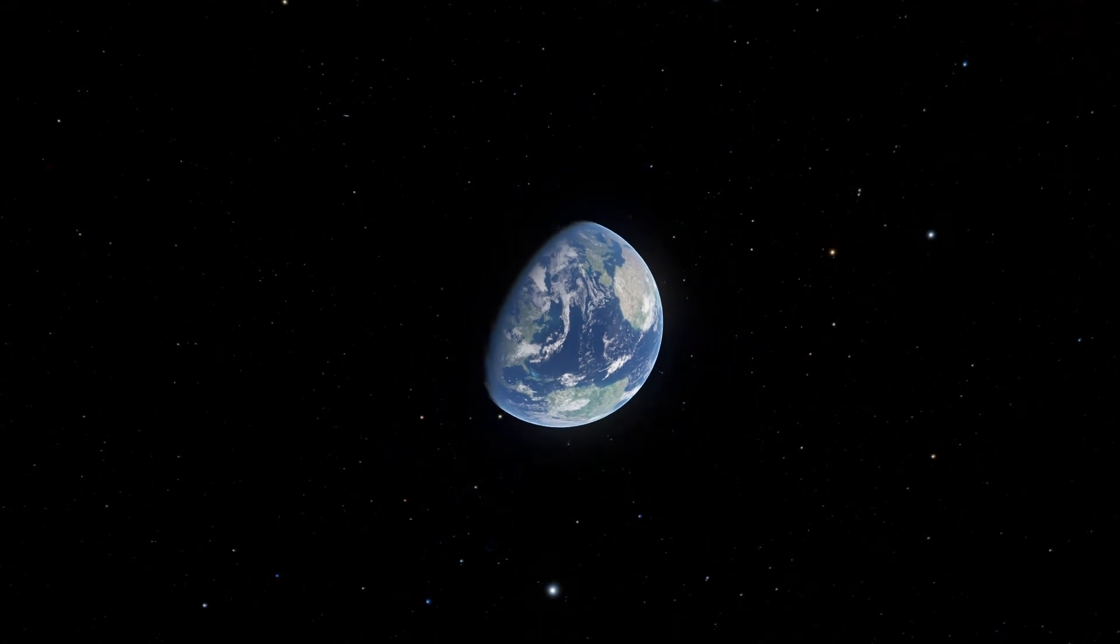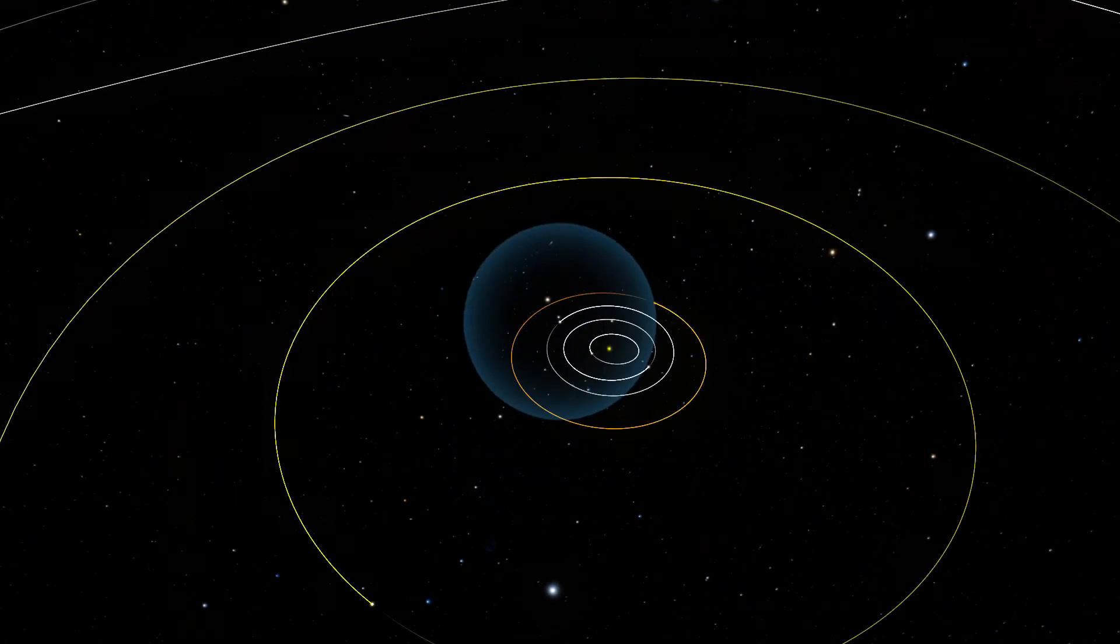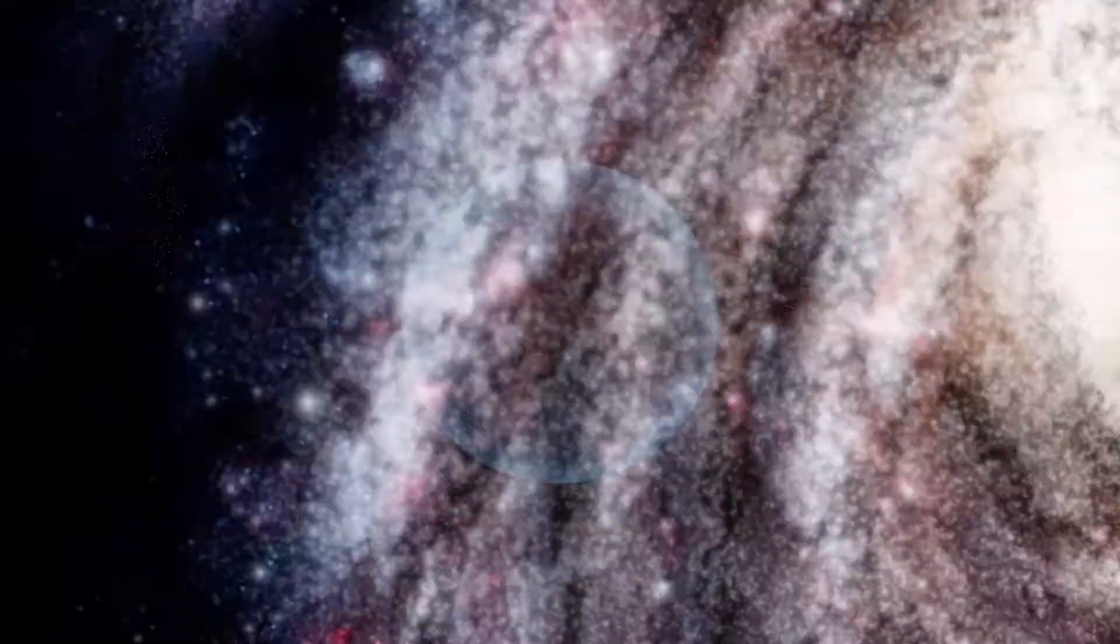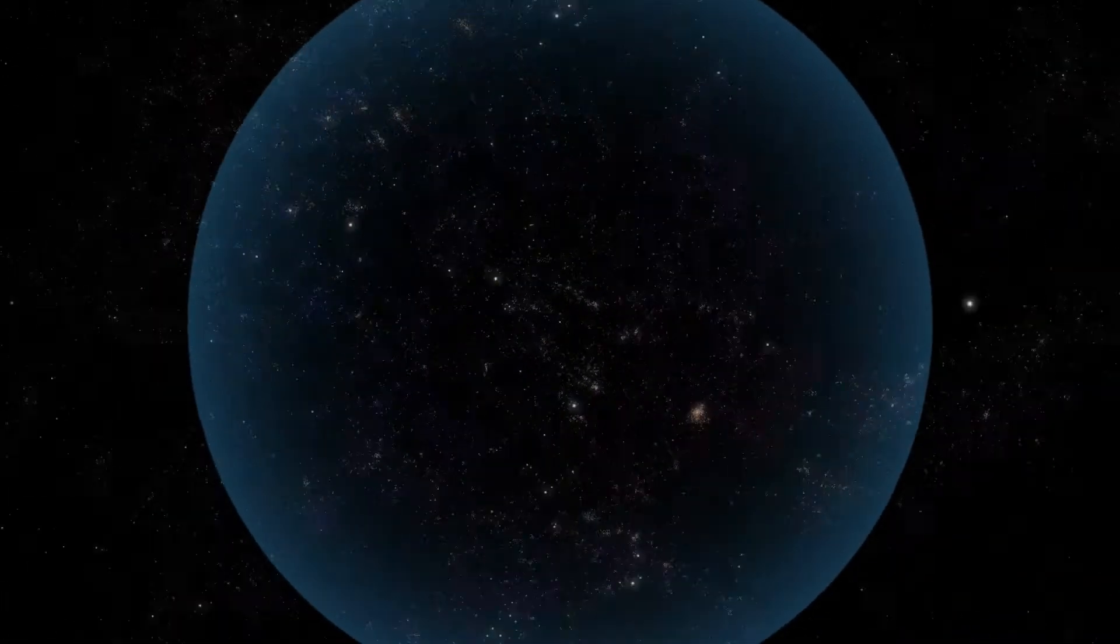These are only the galaxies within the so-called observable Universe. This consists of all objects that can in principle be observed with telescopes like Hubble, those from which light has had time to reach us since the beginning of the Universe.